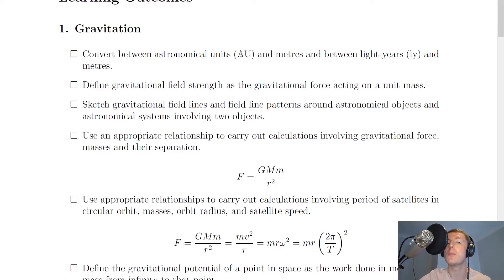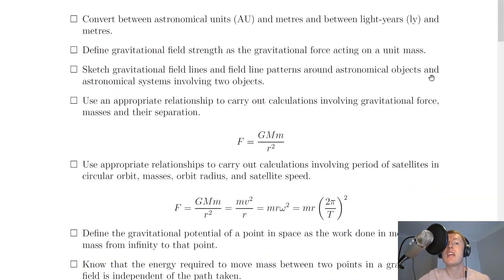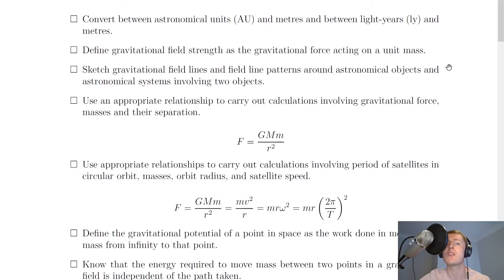Remember, one AU will be given on the datasheet in the exam, but one light year will not. So you need to either remember 9.46 times 10 to the 15 metres is one light year, or be able to derive it from speed distance time. You also need to define gravitational field strength as the gravitational force on a unit mass, or the weight per unit mass.